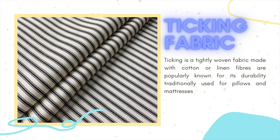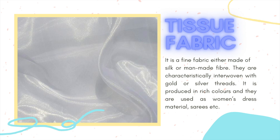Ticking fabric. Ticking fabric is a tightly woven fabric made with cotton or linen fibers, popularly known for its durability, and traditionally used for pillows and mattresses. Tissue fabric. Tissue is a fine fabric either made of silk or man-made fiber. They are characteristically interwoven with gold or silver threads. It is produced with rich colors and used as women's dress materials, sarees, etc.